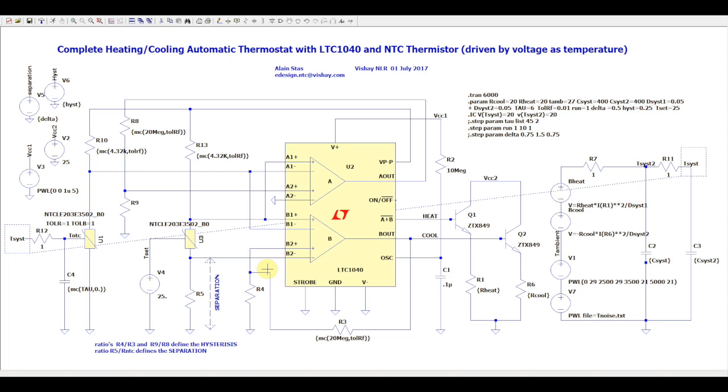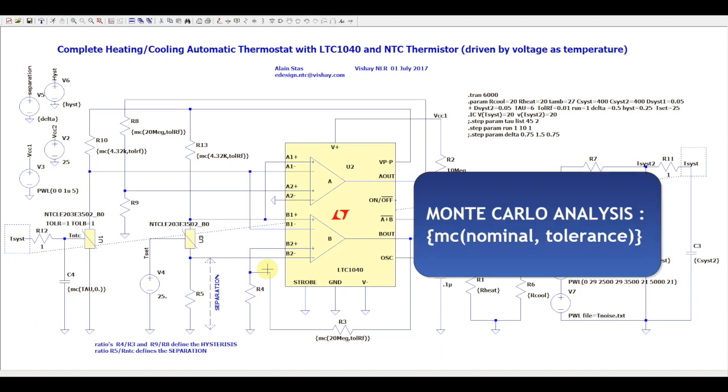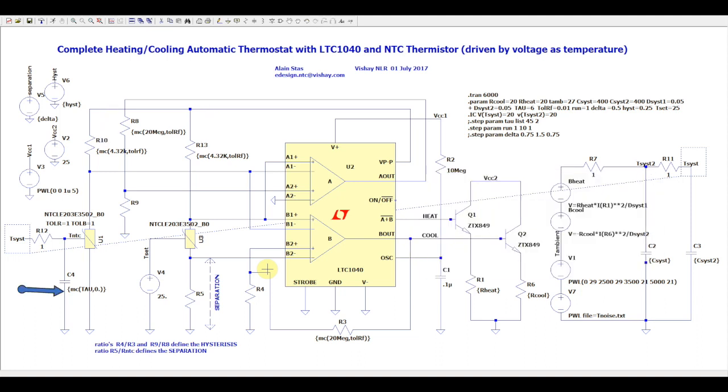In this simulation, we are going to examine the statistical aspect of the temperature control by doing a Monte Carlo analysis. This is the reason of this function, NC, appearing in the fixed resistor value and also present in the thermistor netlist. This means that nearly all the resistor elements and also the thermistor for the R25 and the B value will have their value change in a random way within the limits of their tolerances. And we are going to make several simulations and see globally the effect on temperature control.